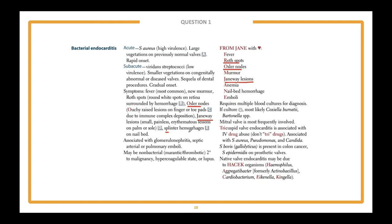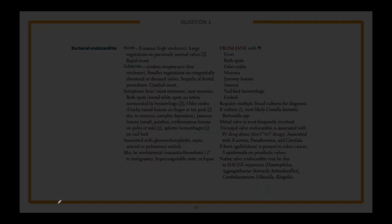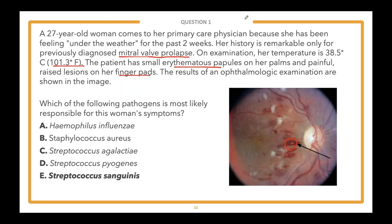The question is: is this more subacute or acute bacterial endocarditis? In acute endocarditis it's usually Staphylococcus aureus because it's highly virulent. However, in this case they told us the patient was feeling under the weather for the past two weeks — a more gradual onset. On top of that, this patient has an abnormal valve with mitral valve prolapse. So more than likely this is subacute bacterial endocarditis. The most common cause is viridans streptococci. Can you name some different types of viridans streptococci species?